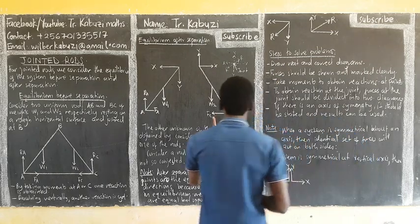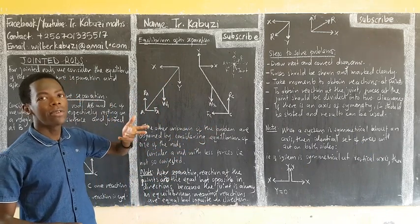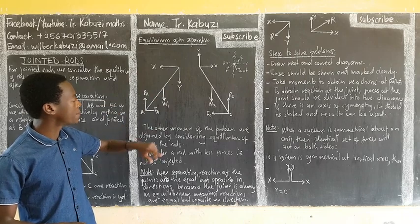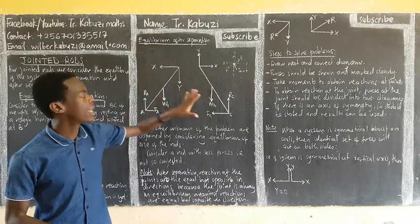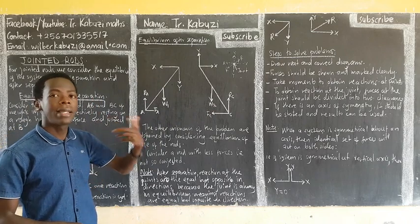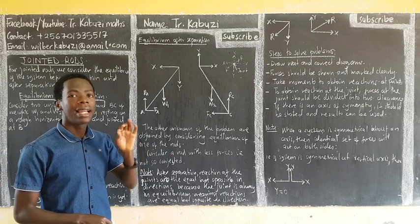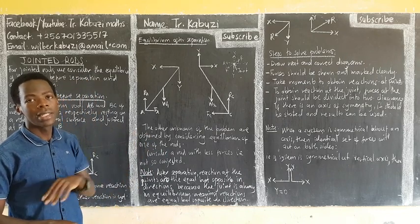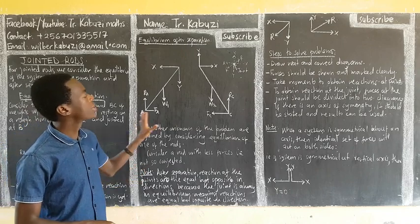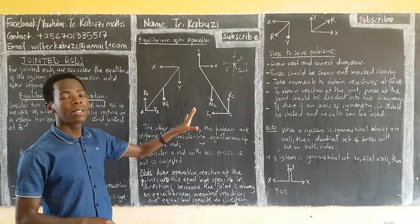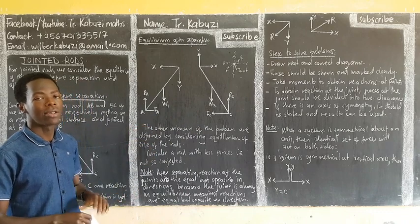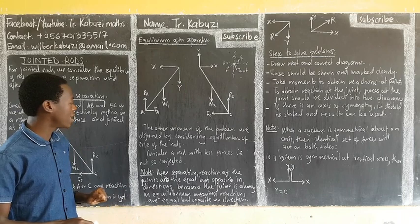To get the other unknowns, consider the equilibrium of either rod. But as we have seen in the equilibrium of individual bodies, it is always better to consider the rod having fewer forces, or which is less complex. Look at the two diagrams and choose the one with fewer forces — that makes your calculations very, very easy.